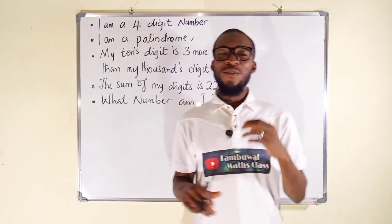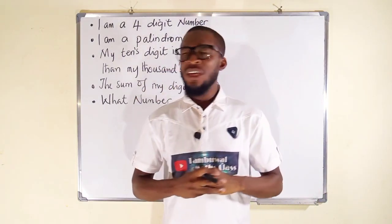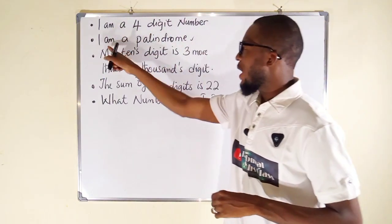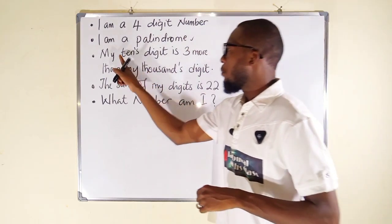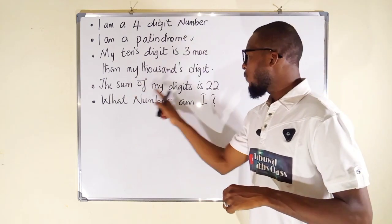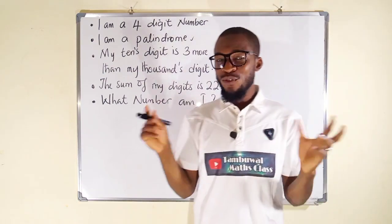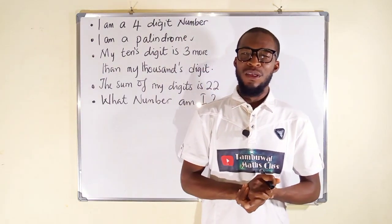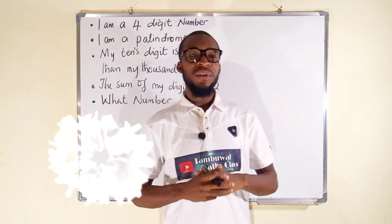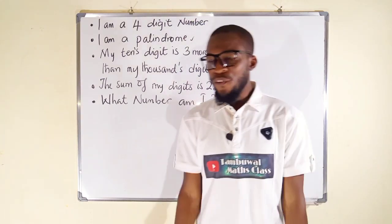Hello, good day viewers. I'm here for the solution of the puzzle which I have posted on my Facebook page, which reads: I am a four-digit number, I am a palindrome, my tens digit is three more than my thousands digit, the sum of my digits is 22. What number am I? You need to understand this question before you even start solving. If you're new here, consider subscribing and press the bell icon so you'll be notified whenever I upload new content.